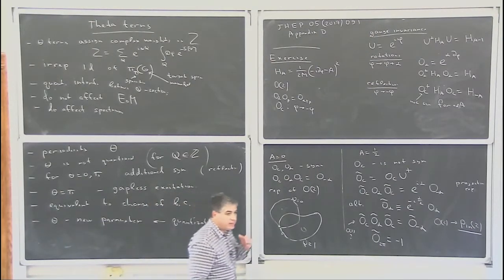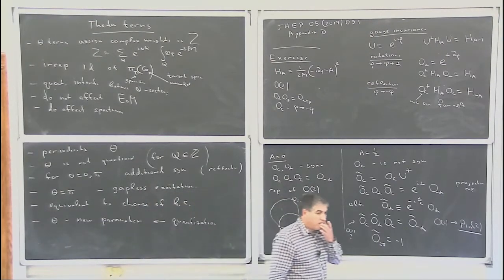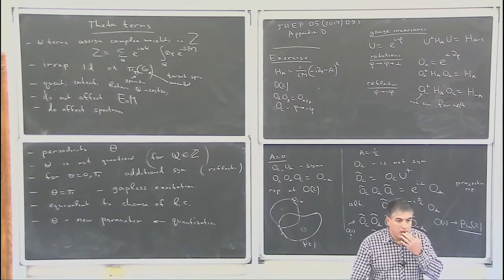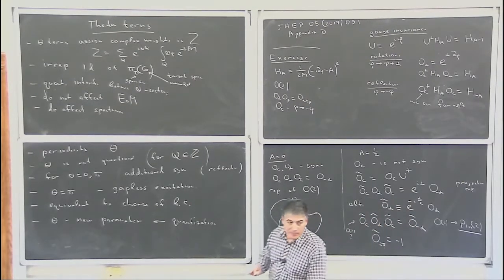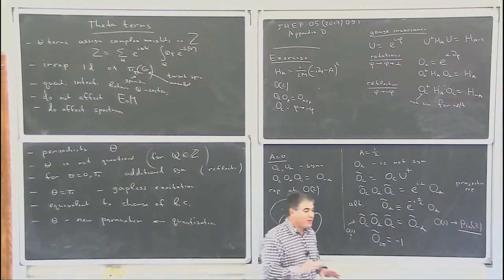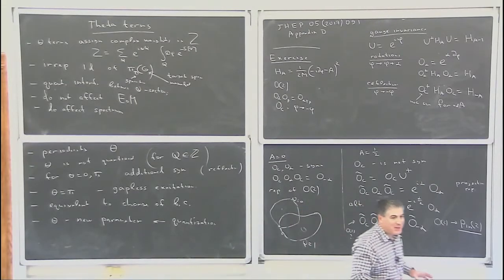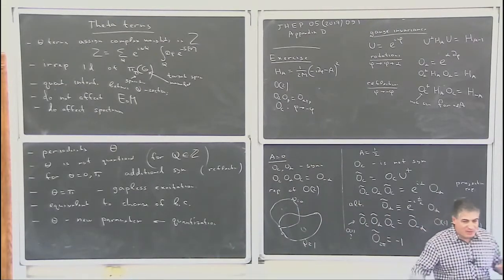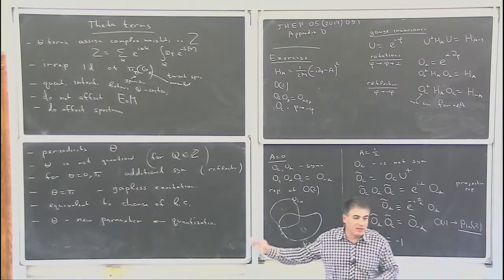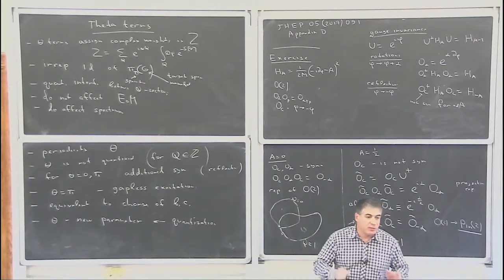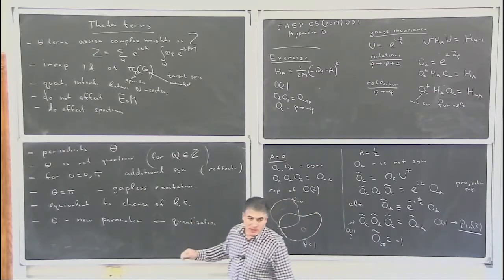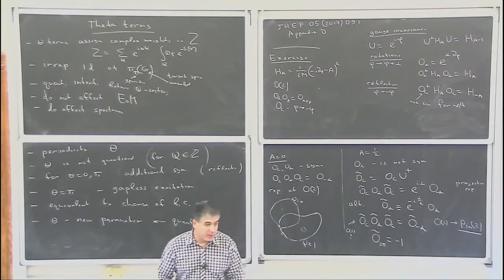What about topological terms that cannot be represented this way? Wait ten minutes — the topic of today's lecture is a totally different type of topological term called the Wess-Zumino term. It cannot be represented the same way and has different properties.